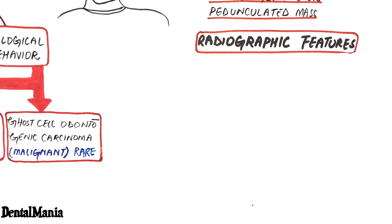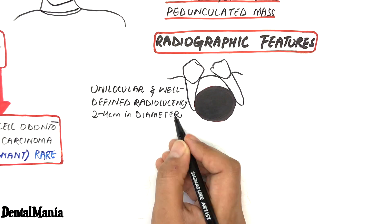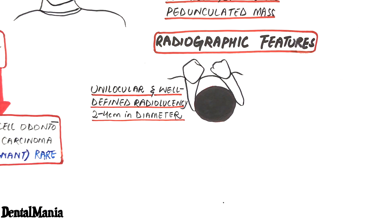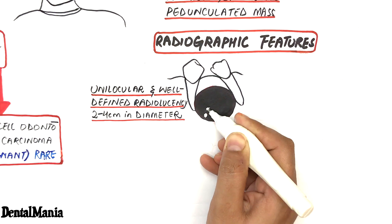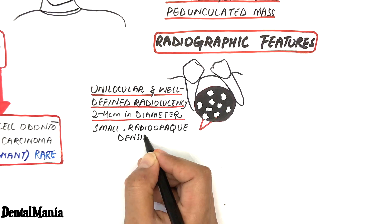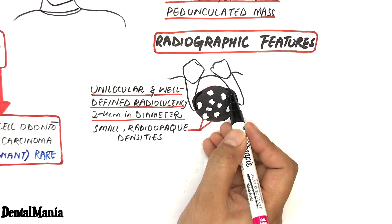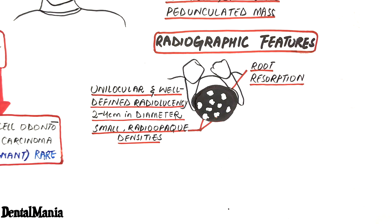Radiographically, the cyst appears as unilocular and well-defined radiolucency measuring about 2–4 cm in diameter. It may even appear multilocular with a diameter up to 12 cm, though cases of that extent are extremely rare. In about one-third to one-half of cases, small radiopaque densities are observed within the cystic cavity, either irregular or chute-like in structure. The cyst may also cause resorption or divergence of adjacent roots.